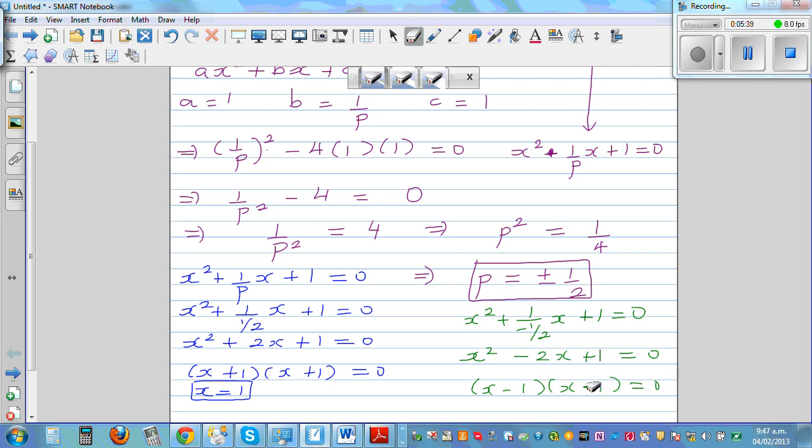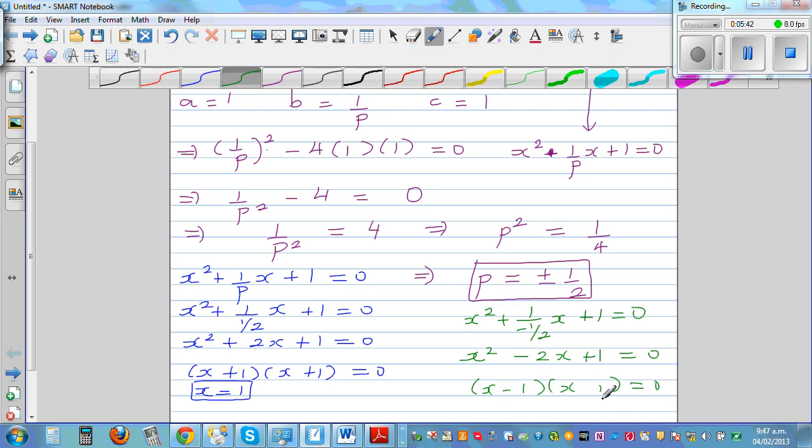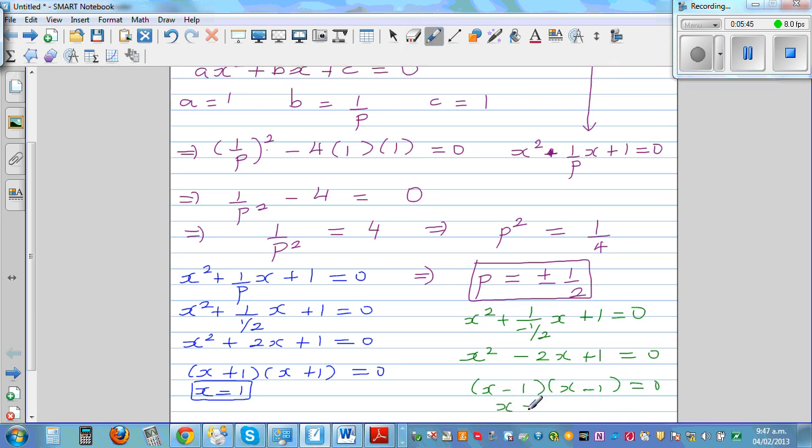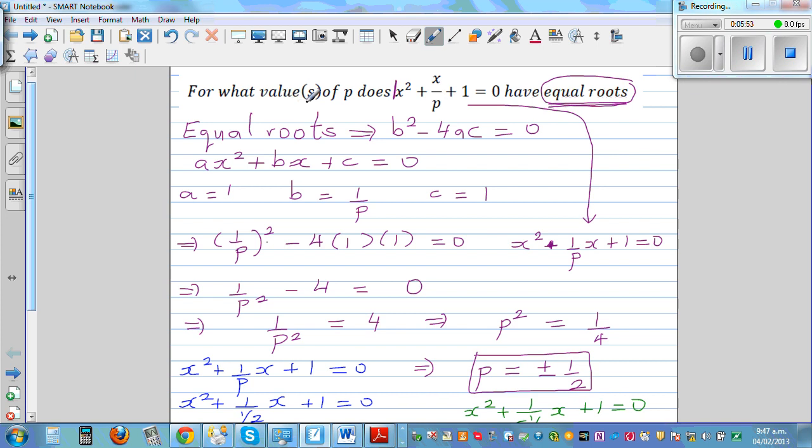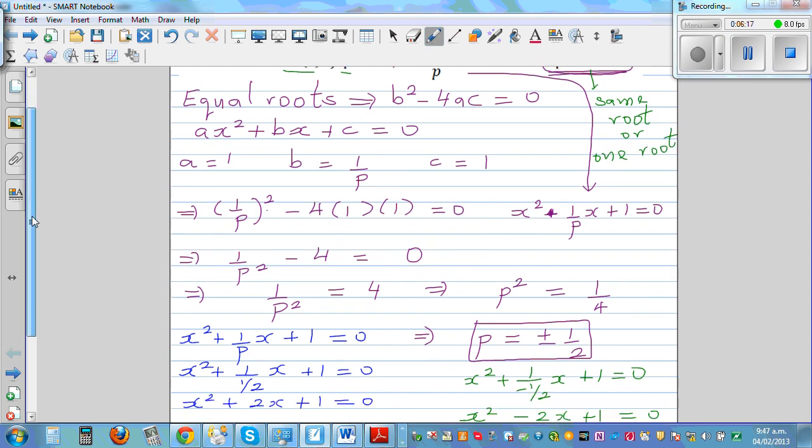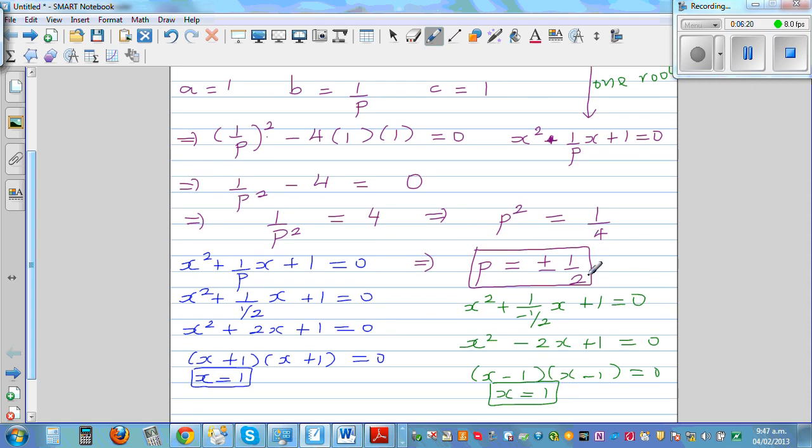This is x minus 1, so x is equal to 1. So this is what it means to say. So let us go back and understand the question. What did it say? For what values of p does this equation have equal roots? Equal roots means same roots or one root. Equal roots means it is the same root or simply, it means it has got only one root. p can be half or p can be negative half.